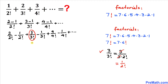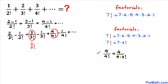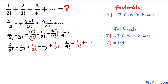So we replace that fraction with 1 divided by 2 factorial. Next, 4 divided by 4 factorial can be written as 4 divided by (4 times 3 factorial), and the 4s cancel, giving 1 divided by 3 factorial. Similarly, the next term, 5 divided by 5 factorial, simplifies to 1 divided by 4 factorial, and so on. We now substitute these simplified forms back into the series.